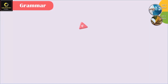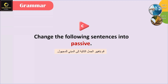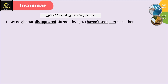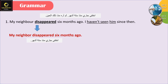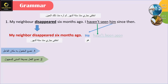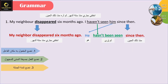Question C: change the following sentences into passive. 'My neighbor disappeared six months ago. I haven't seen him since then.' أولا منحط الجملة الأساسية متل ما هي — my neighbor disappeared six months ago. هلأ منحط المفعول به أولا، فهم بتصير هي، بعدها منحط الفعل بالمبني للمجهول — الحاضر التام بيصير حاضر تام مبني للمجهول — hasn't been seen، وآخر شي منحط التتمة: since then. He hasn't been seen since then.